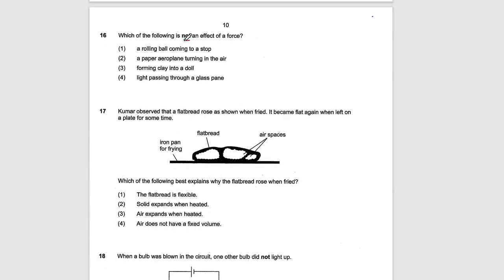Next one. Which is not an effect of a force. A rolling ball coming to a stop. Yes, a force can stop a moving object. A paper airplane turning in the air. Yes, it can. So this one is stopping a moving object. This one is changing the direction. Forming clay into a doll. Yes, a force can change the shape of an object. Light passing through a glass pane. This is light properties. So answer is number 4.